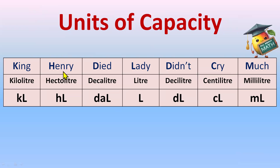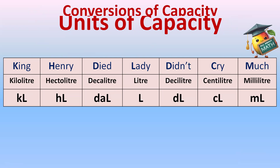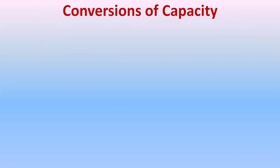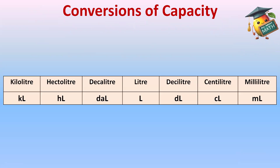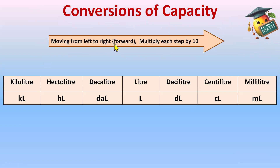King Henry Died Lady Didn't Cry Much — this mnemonic will help us in the conversion of capacity. First, write out the table with the help of the mnemonic. After that, when we are moving forward — that is, moving from left to right — multiply each step by 10.